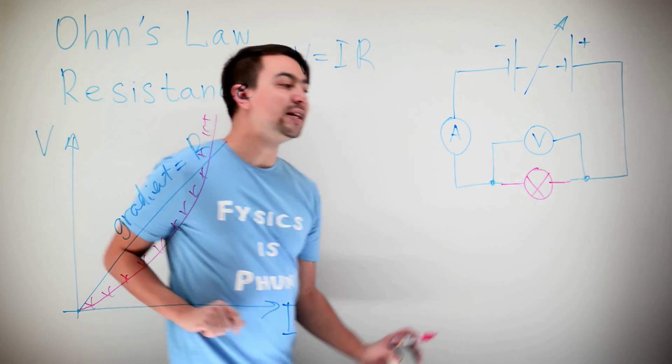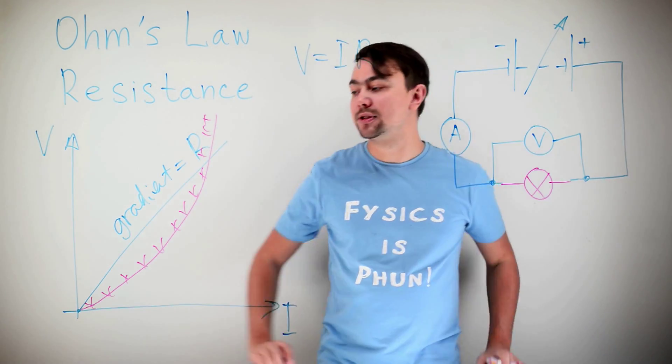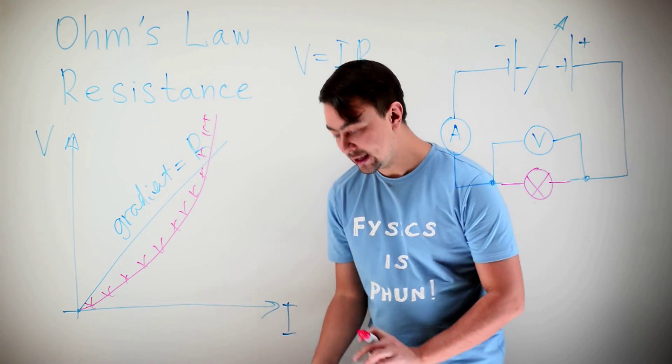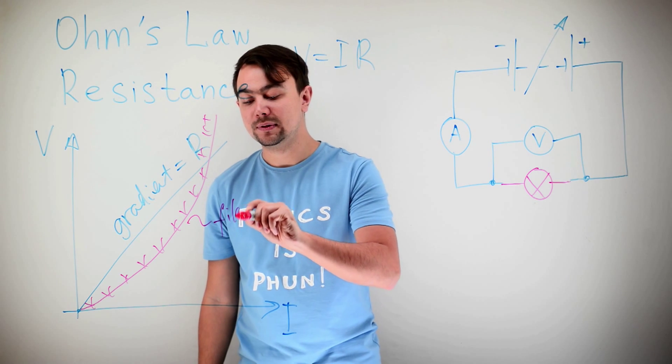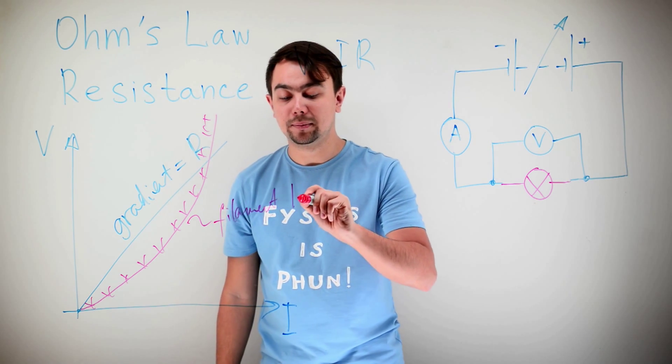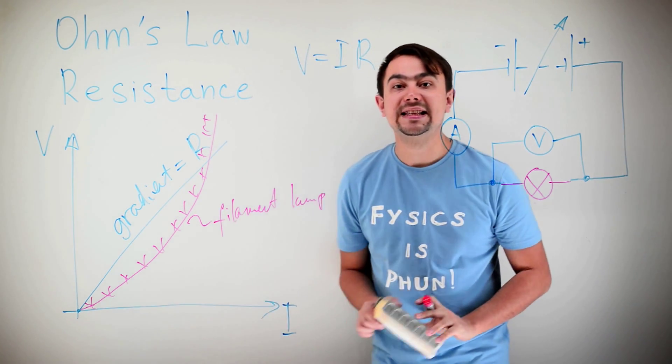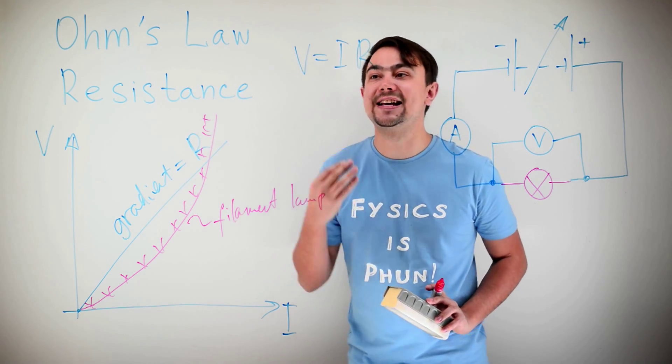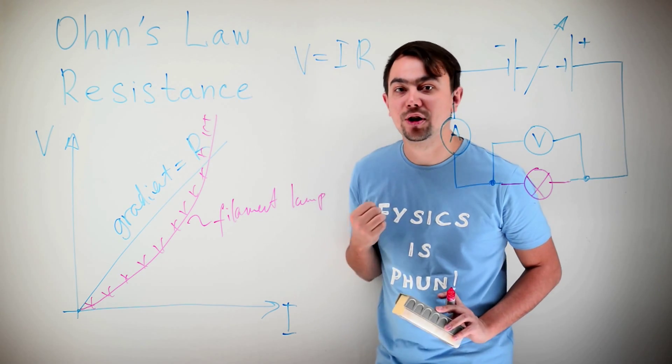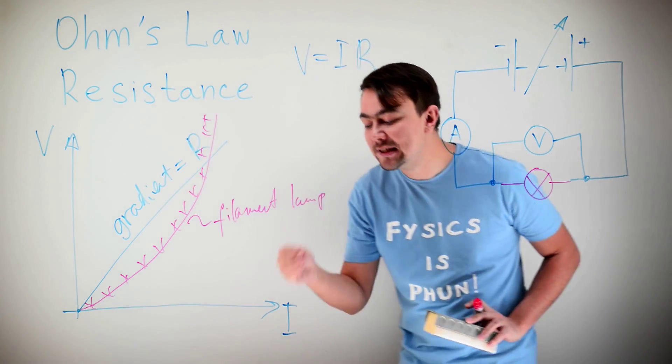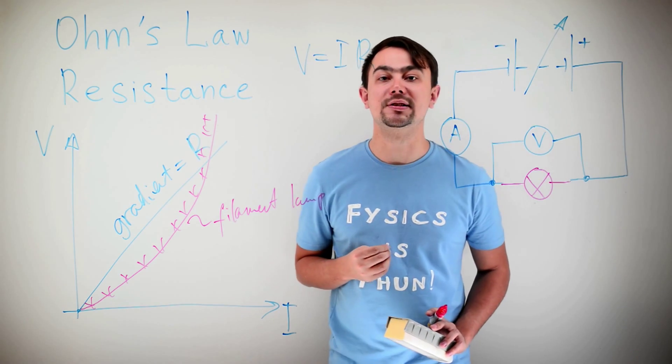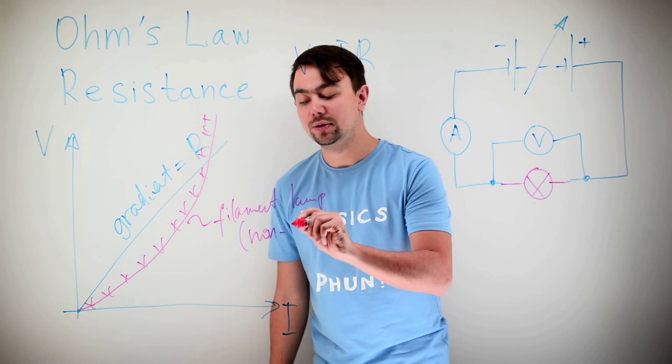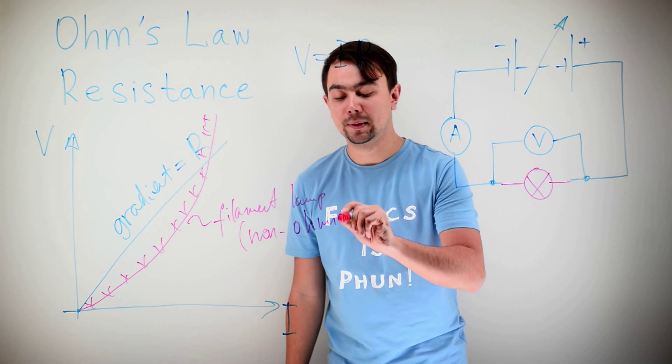But as the current increases, the lamp becomes hotter, and the gradient increases. So this is a graph for a filament lamp. And since the filament lamp does not obey Ohm's law, in the sense that the resistance is not constant, that means that the voltage is not proportional to the current. We call it a non-ohmic conductor.